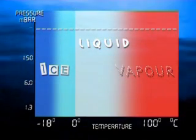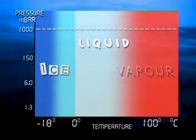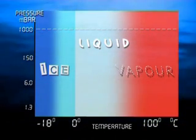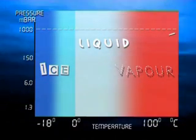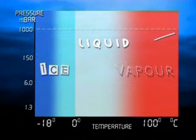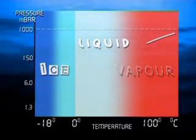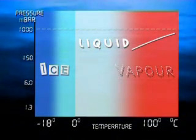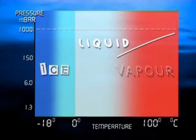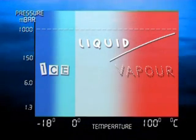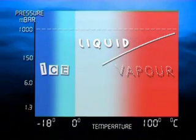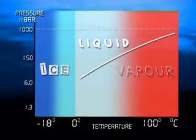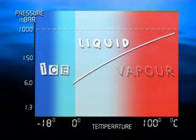But if we look at the effect of changing pressure as well as temperature, some interesting things happen. As the pressure decreases, the temperature at which water changes from liquid to vapor also decreases. If you lower the pressure enough, water will become vapor at normal room temperature.